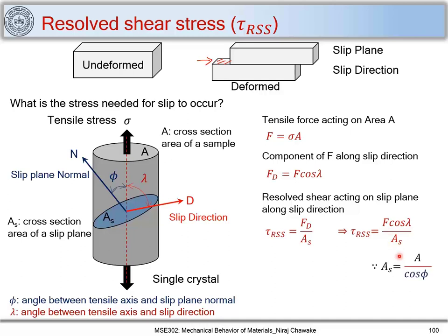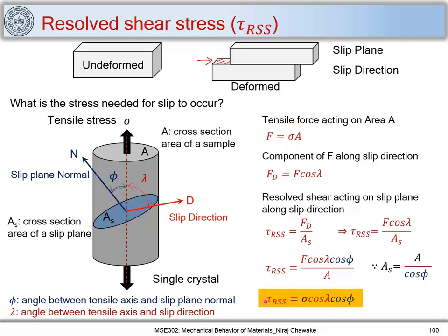We can also express A_s in terms of A: since the slip plane normal N makes angle phi with the tensile axis, the geometry gives A_s = A / cos(phi). Substituting this, tau_RSS = F cos(lambda) × cos(phi) / A. Since F/A = sigma, we get tau_RSS = sigma × cos(lambda) × cos(phi). This is a simple but very important relation.